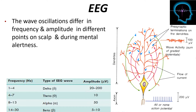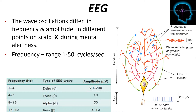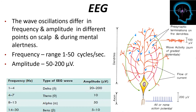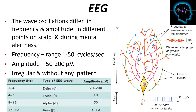The electroencephalogram consists of oscillatory waves. These oscillations differ in frequency and amplitude at different points on the scalp and during different stages of mental alertness. Frequency of brain waves ranges from 1 cycle to over 50 cycles per second. Amplitude may vary from 50 to 200 microvolts. Most of the time these waves are irregular, but at times they have a distinct pattern. Different waves recorded in a normal person are classified by frequency as alpha, beta, theta, and delta waves.